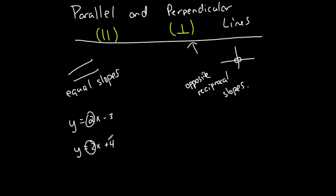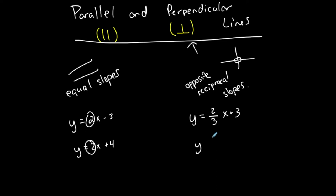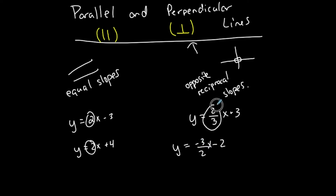For perpendicular lines, let's say the slope is 2x plus 3 — they have opposite reciprocal slopes. Opposite means one is positive and one is negative. Reciprocal means flip it, so the reciprocal of 2 is 1/2. The opposite makes it negative, so the opposite reciprocal of 2 is negative 1/2. Those are perpendicular slopes.